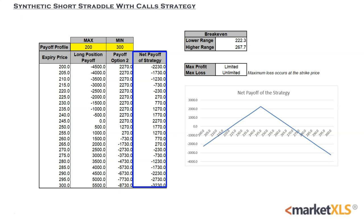The user has to enter the inputs of the minimum and maximum payoff profile. The table contains the net payoff of the strategy at different expiry prices. In the chart, the y-axis is the net payoff of the strategy and the x-axis is the range of expiry prices. Maximum loss occurs at the strike price. This strategy earns maximum profits at expiration if the underlying stock expires below the upper breakeven point or above the lower breakeven point.